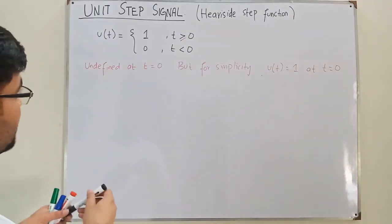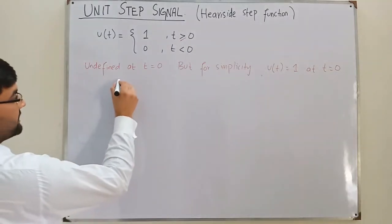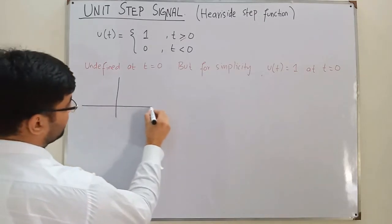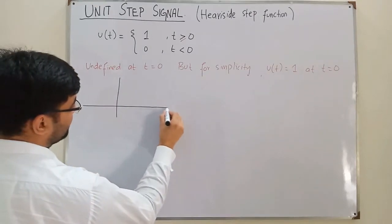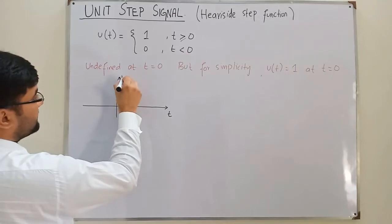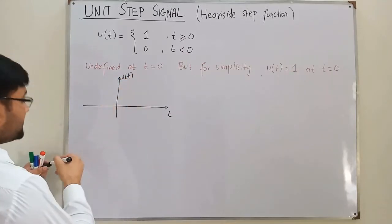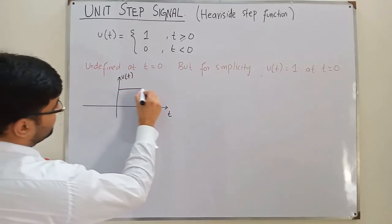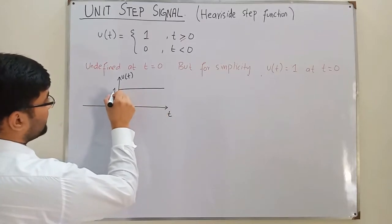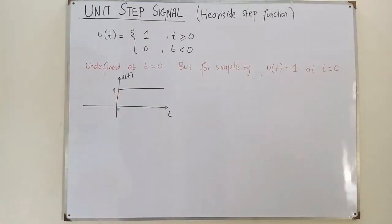If we draw it, with u(t) on the vertical axis and t on the horizontal axis, the function has value 1 from t equals 0 onwards and 0 for negative time. That is the graph of u(t).